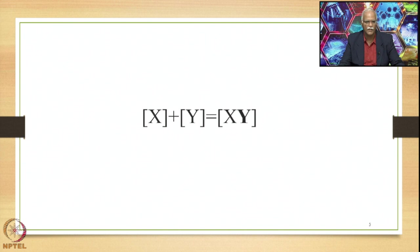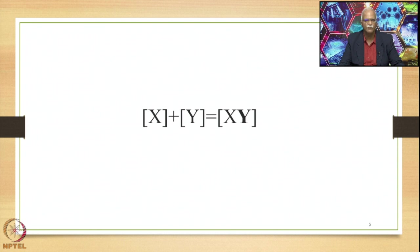In the Tatpurusha Samasa, it is Y which acts as the head of the compound unit. XY, as an output that becomes input for sentence generation, will be linked to any external meaning only through the meaning of Y. X will also have to be linked to any external meaning only through Y. There are some exceptional cases where X is not shown to be related to external elements through Y; these cases are noted as examples of a Samartha Samasa.